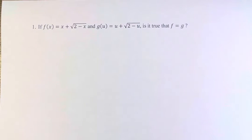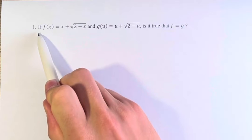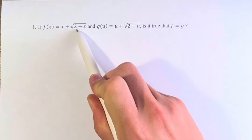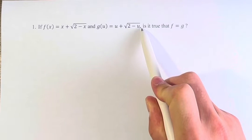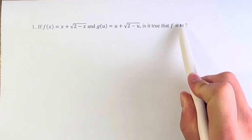Hello and welcome back to another video. In this problem, we're asked if f of x is equal to x plus the square root of 2 minus x and g of u is equal to u plus the square root of 2 minus u, is it true that f is equal to g?